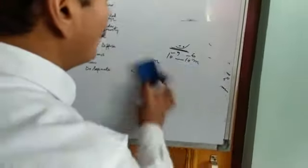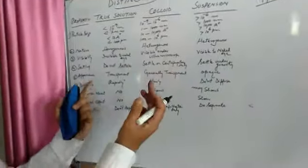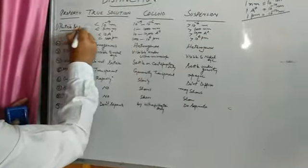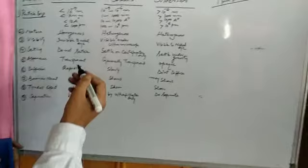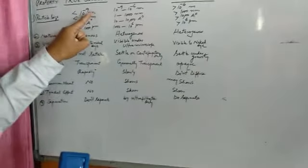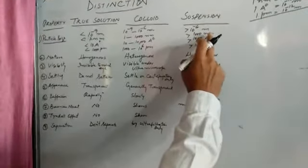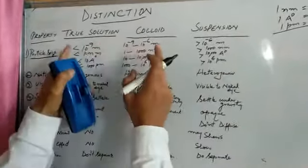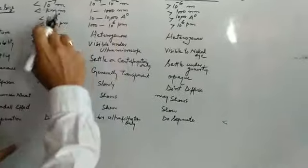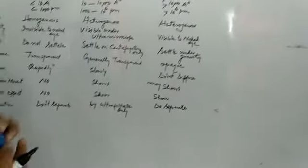Now we can distinguish between these three. We shall take different properties and differentiate between suspension, colloid, and true solution. The first property for distinction is particle size: less than 10⁻⁹ meter for true solutions, greater than 10⁻⁶ meter for suspensions, and between 10⁻⁹ to 10⁻⁶ meter for colloids.